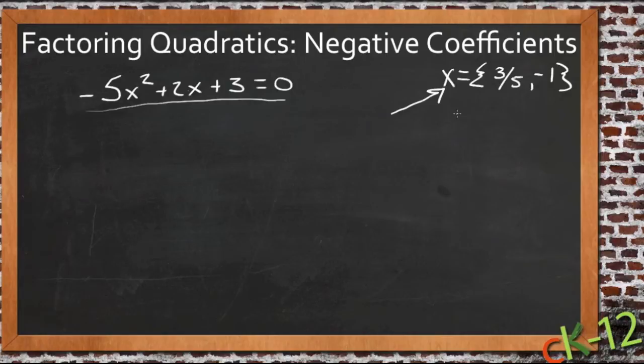But she was, and I'm not sure who told her, someone told her that it should have been negative 3 fifths and positive 1. And she said she didn't think that was right and wasn't quite sure why. So we're going to go through this step by step and see what we come up with.